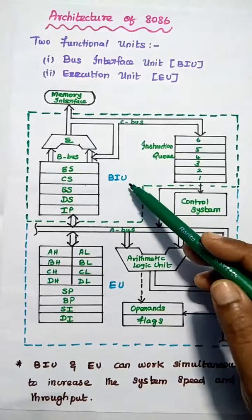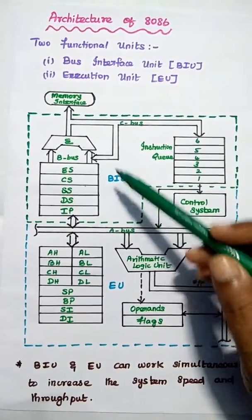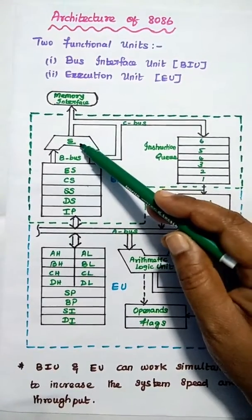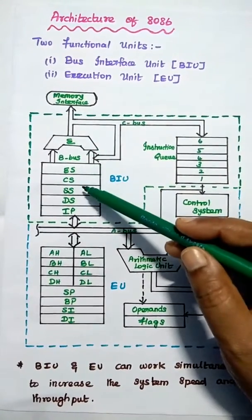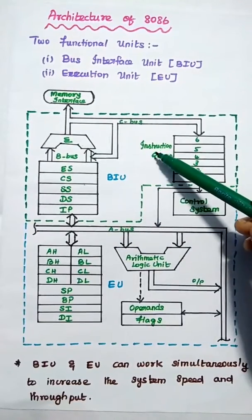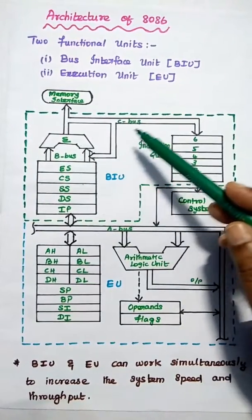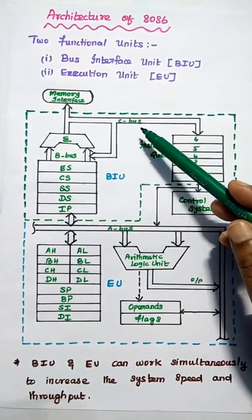The Bus Interface Unit consists of the address summer, segment registers, instruction pointer, instruction queue, B-Bus, and C-Bus.